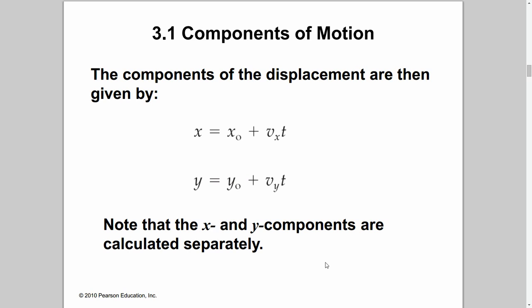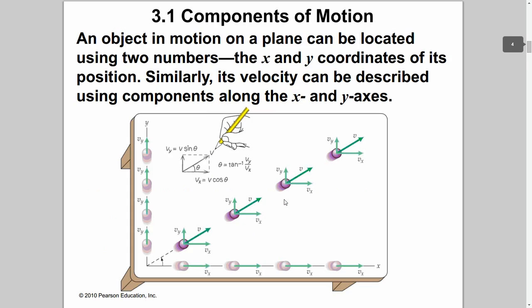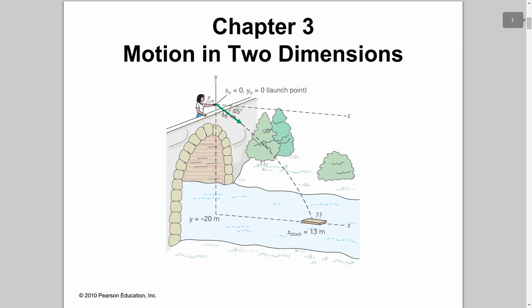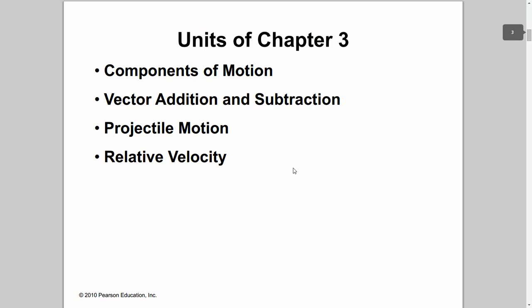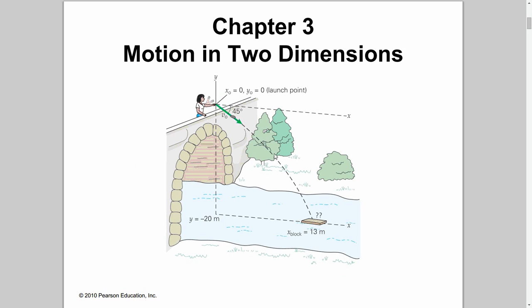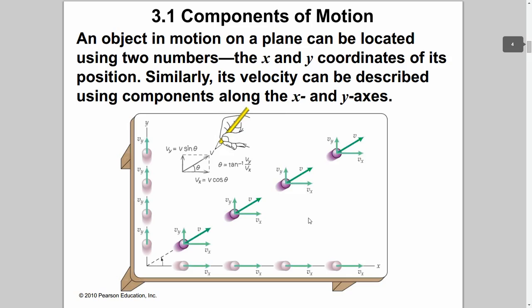The components of displacement are usually given in this form: x equals x-naught plus vx times t, and y equals y-naught plus vy times t. It's the same equation — we're just separating the x's and y's. These can be calculated separately. Going back to the rock example, we use these equations to calculate the two velocity components, which then give us the magnitude of the resultant velocity.